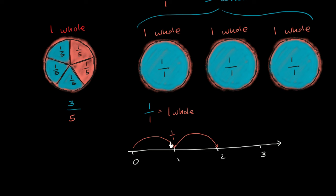We've essentially taken two of these jumps. Each jump is 1/1. Now we are 2/1, which is the same thing as 2. You take another jump, and we get to 3/1, which is the exact same thing as 3.